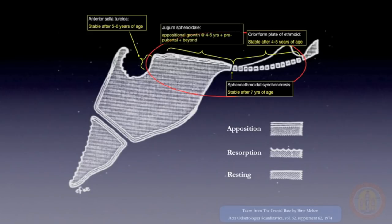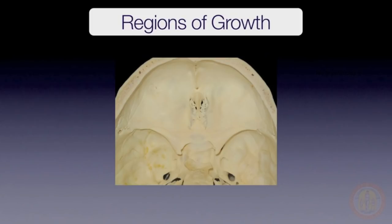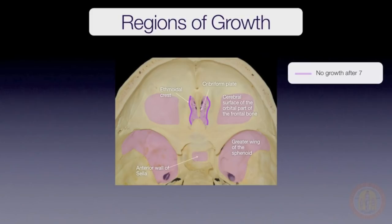The planum, or jugum sphenoidale, shows minimal growth after age six, but bony apposition can occur in some cases up to 14 years of age. It has also been shown that the ethmoidal crests, which grow only minimally after six years of age, can be relied upon for superimposing, as can the cerebral surfaces of the frontal bone associated with the orbits and the greater wing of the sphenoid, both of which are relatively stable after age seven.